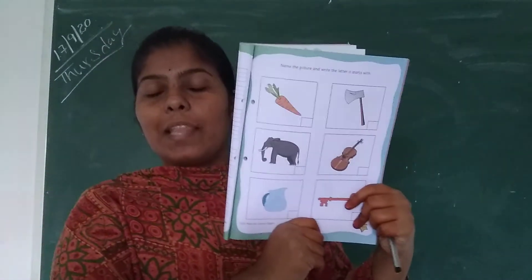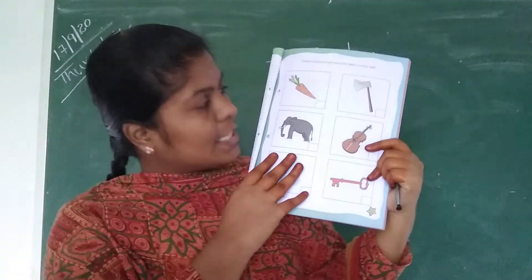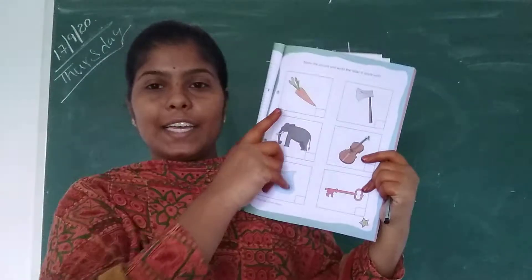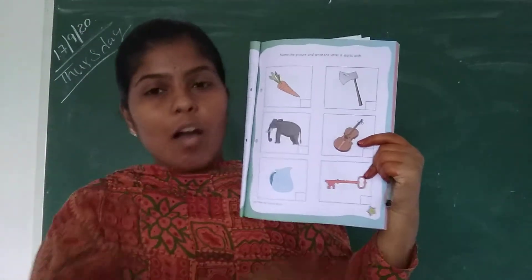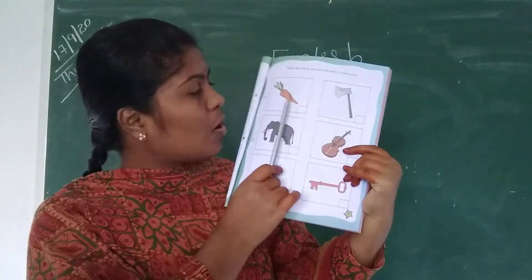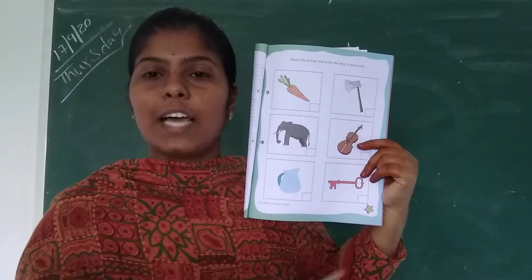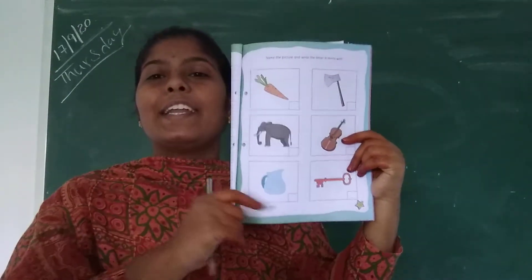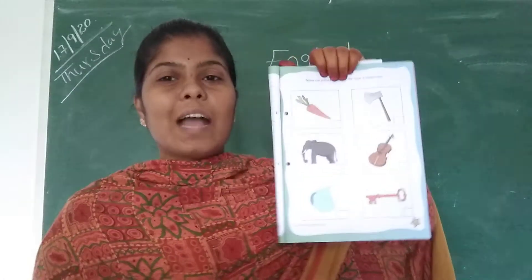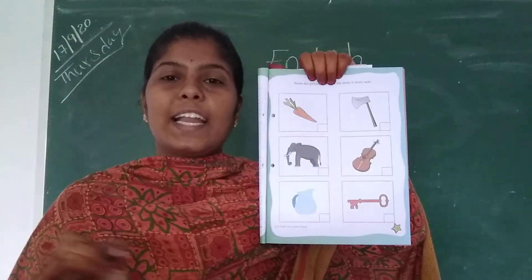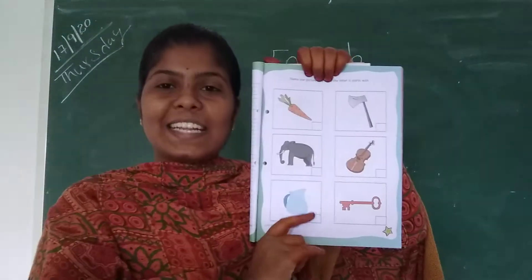Open page number 11. See, in this space there are different food items, animals, things — all are there. So we have some pictures in this space. We have to identify the picture name and we have to write the starting letter of the picture's names. Okay children, let us start.